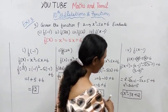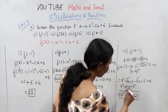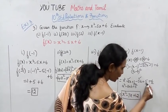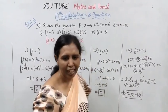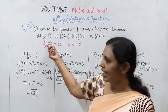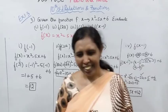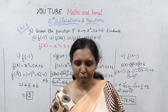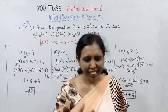So f of x minus 1 equals x square minus 7x plus 12. This is the final answer for the fourth subdivision. If you practice it 2 or 3 times it will be easy. Subscribe to the channel and click the bell button.